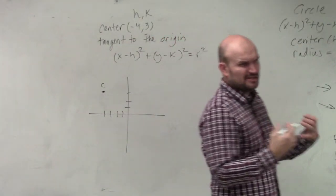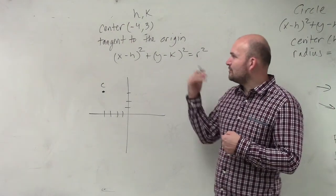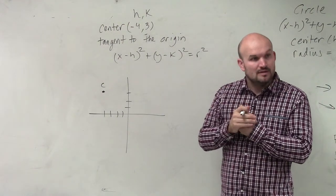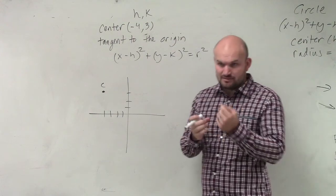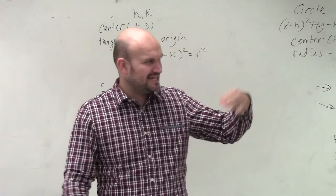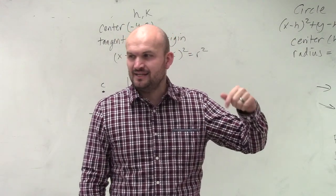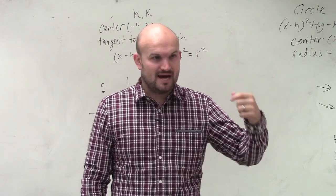Now, what other information it says? It says that my graph is tangent to the origin. So what that means is it touches the origin, remember tangent?